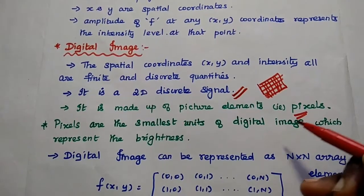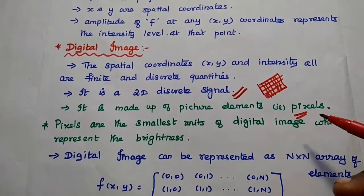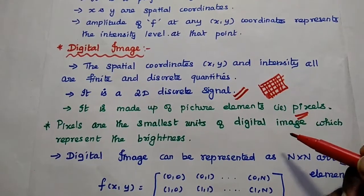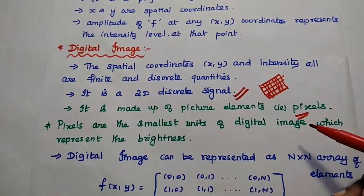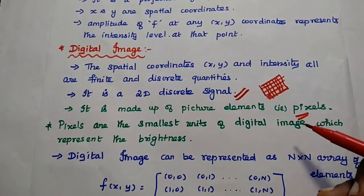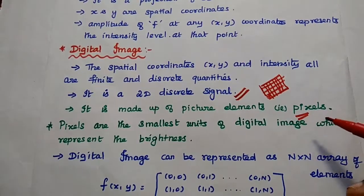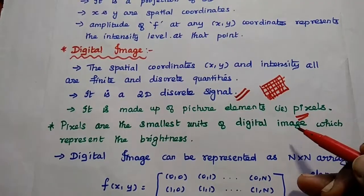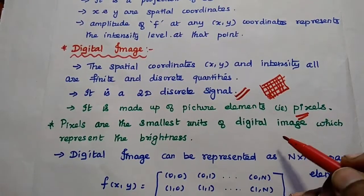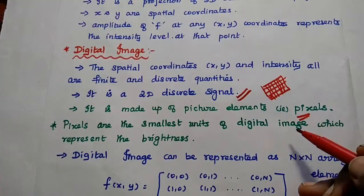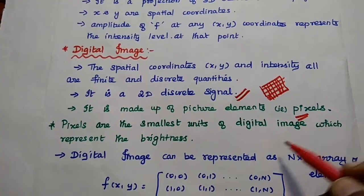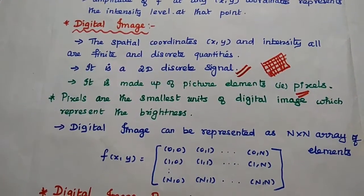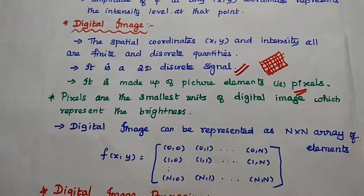If you zoom a picture which has been taken with low resolution, while zooming we can see the pixels are broken — the zoom is not very clear because of the low resolution, the pixel value is very less. In high resolution, high definition, the pixel value is very accurate. So here the digital image can be represented as an N×N array of elements.